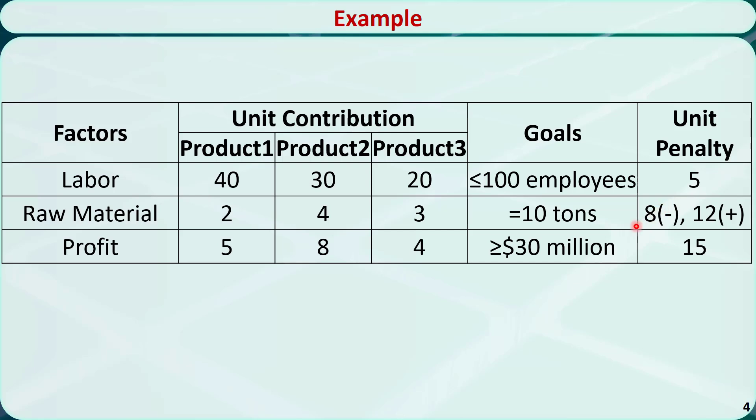If the total raw material needed is different from 10 tons, each ton that is below the goal is associated with a penalty of 8, and each ton that is above this goal is associated with a penalty of 12. If the profit is less than 30 million dollars, each million dollars under the goal is associated with a penalty of 15. So the manager wants to minimize the total penalty.